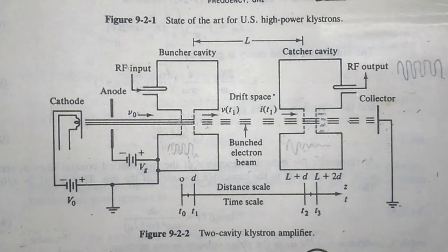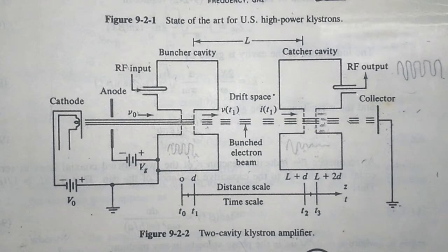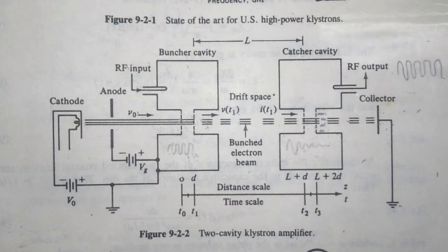In this video, let us learn about the two-cavity klystron amplifier. A two-cavity klystron amplifier is an amplifier used at microwave frequencies. The conventional vacuum tubes, BJTs, MOSFETs, and FETs are not suitable for use at microwave frequencies because of lead inductance and inter-electrode capacitance.